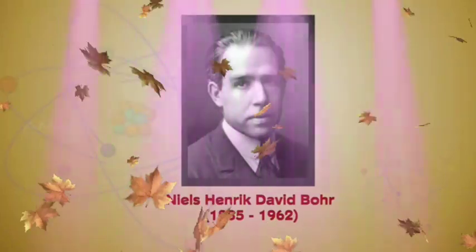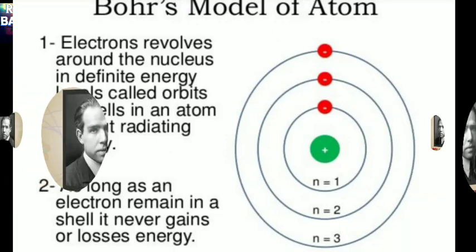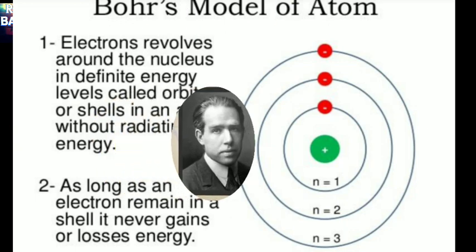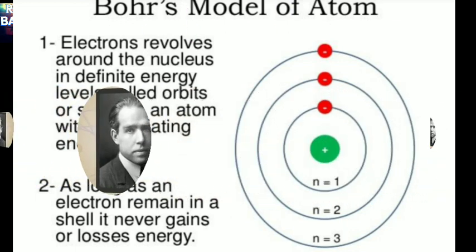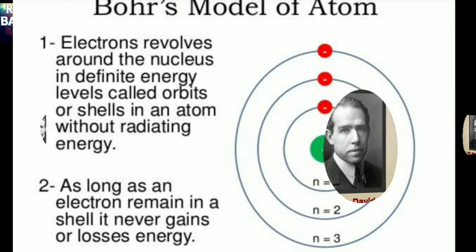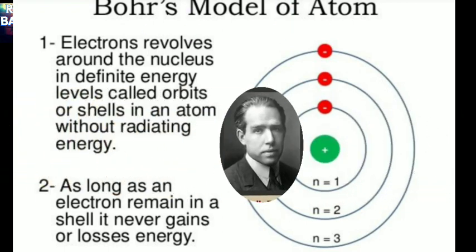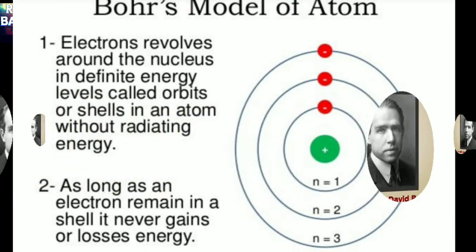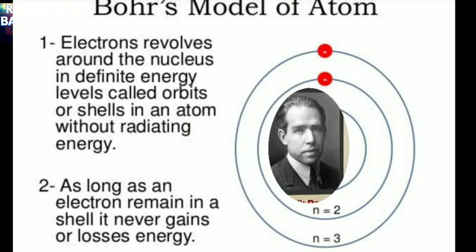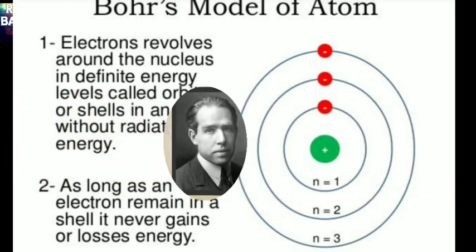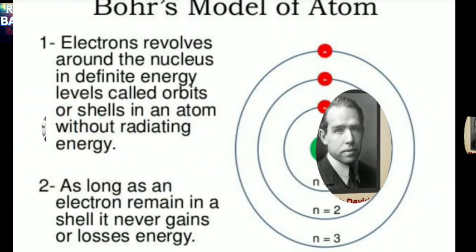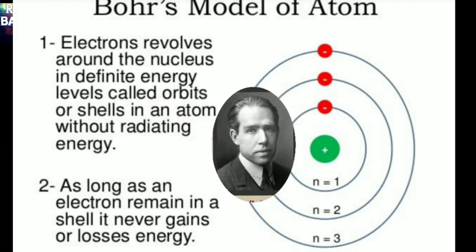In the year 1913, Danish scientist Niels Bohr explained the stability of atoms by putting forth the stable orbit atomic model. The important postulates of Bohr's atomic model are as follows: The electrons revolving around the atomic nucleus lie in concentric circular orbits at certain distances from the nucleus. Second, energy of an electron is constant while it is in a particular orbit. And third, when an electron jumps from an inner orbit to an outer orbit, it absorbs energy equal to the difference of its energy level.